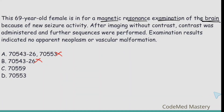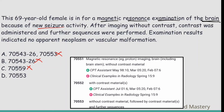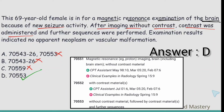Option C: 70559 — magnetic resonance imaging brain, including brain stem and skull base, during open intracranial procedure — example: to assess for residual tumor or residual vascular malformation. The scenario patient is coming for MRI of the brain due to new seizure activity, not for assessment of residual tumor or vascular malformation during open intracranial procedure — so eliminate option C. Option D: 70553 — magnetic resonance imaging brain, including brain stem, without contrast material followed by contrast material. The scenario confirms imaging was done without contrast then contrast was administered — so option D is the right answer.